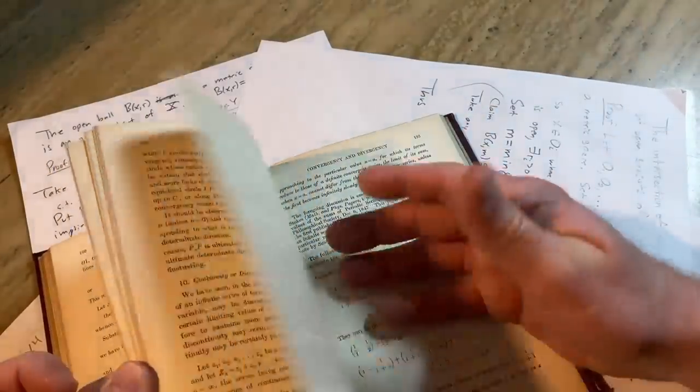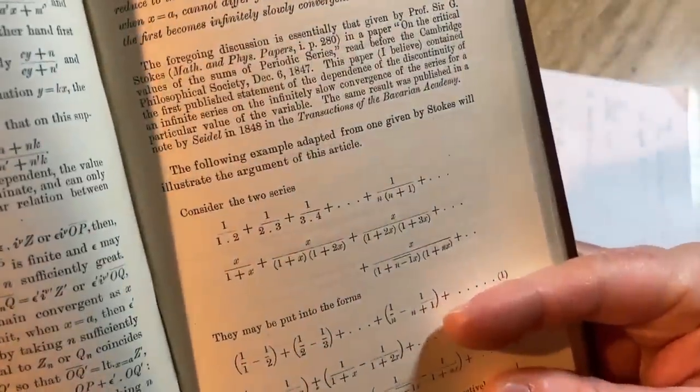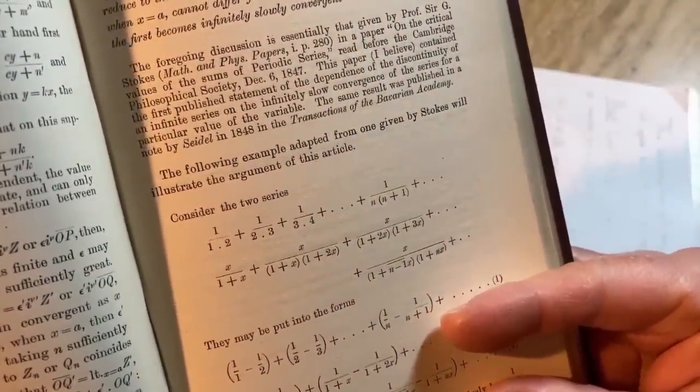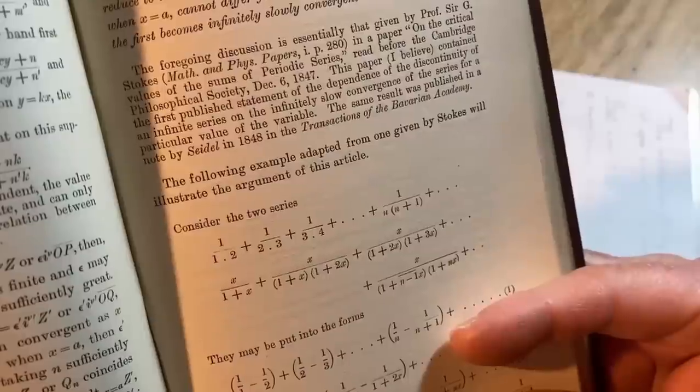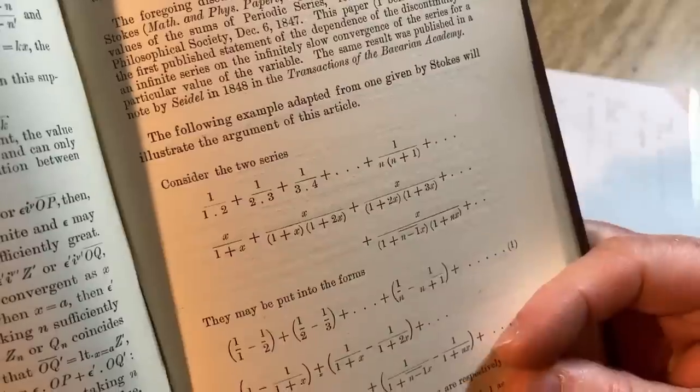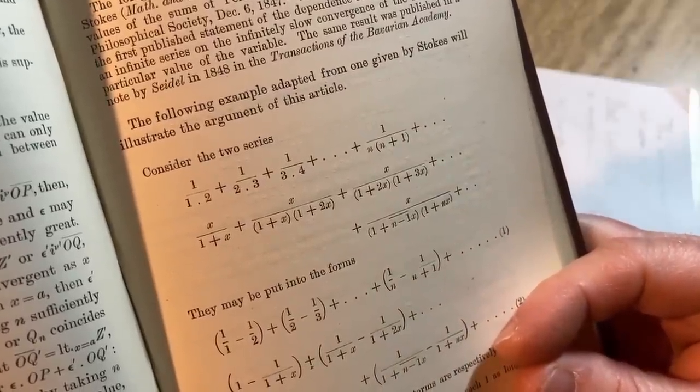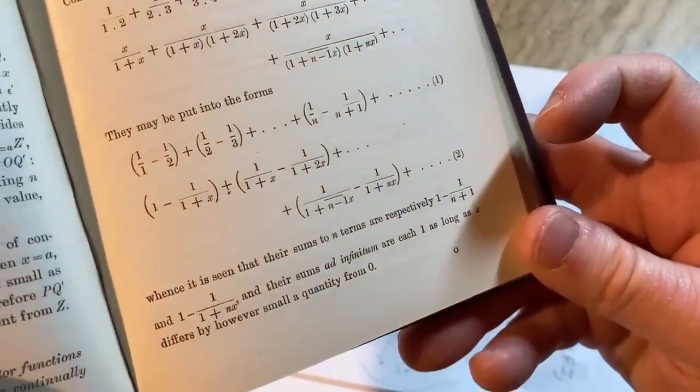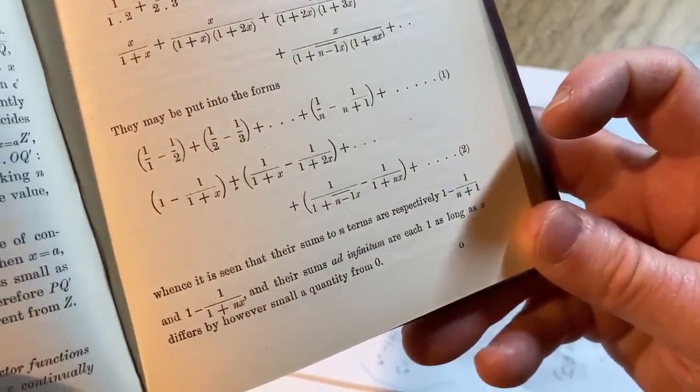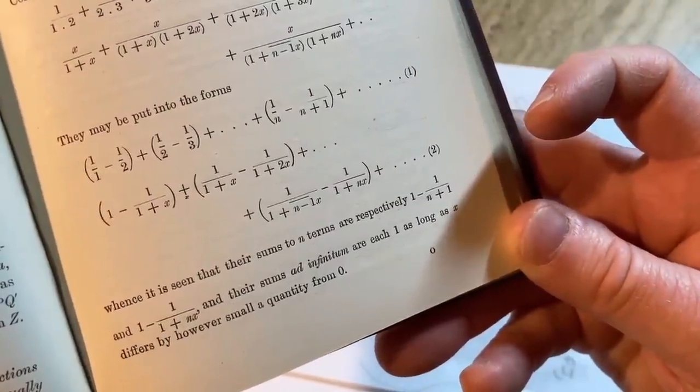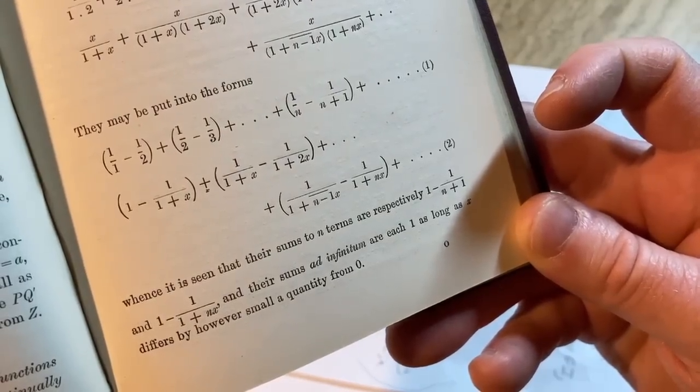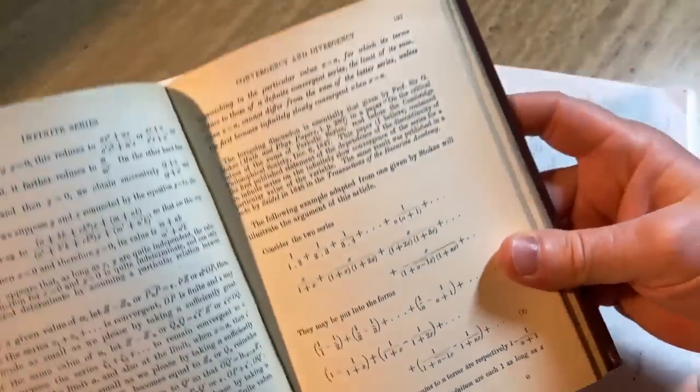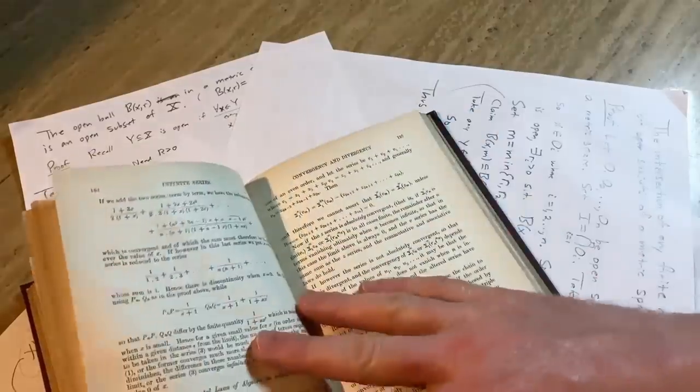Here we go, here's some examples. Look at this one, looks interesting. The following example adapted from one given by Stokes - wow wow - given by Stokes will illustrate the argument of this article. Okay so we have the sum. They may be put into forms. Once it is seen that their sums to n terms are respectively one minus one over m plus one and one minus one over one plus nx, and their sums ad infinitum are each one as long as x differs by however small a quantity from zero.